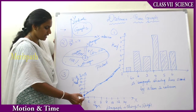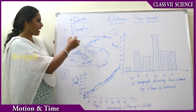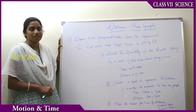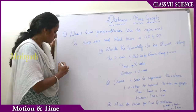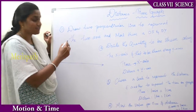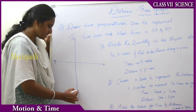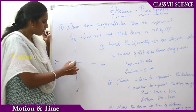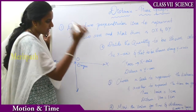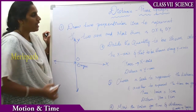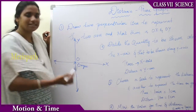Now we will see how to plot a graph between distance and time by following some steps. Step one: draw two perpendicular lines to represent the two axes and mark their origin. Step two: decide the quantity to be shown along the x-axis and what is to be shown along the y-axis — that means on the x-axis what you have to represent, divided into equal number of units.